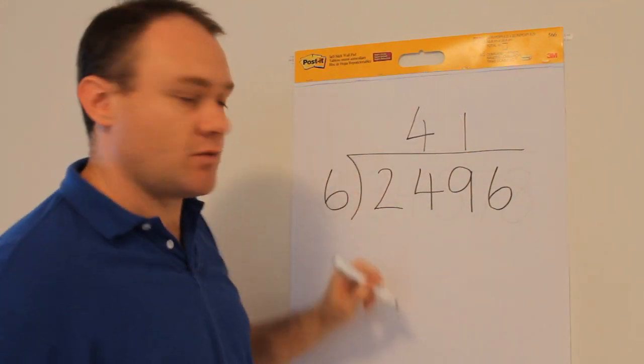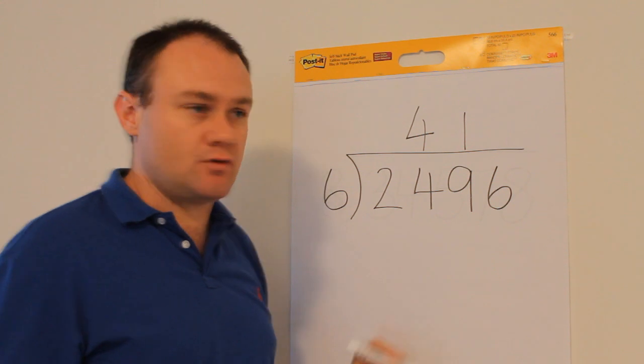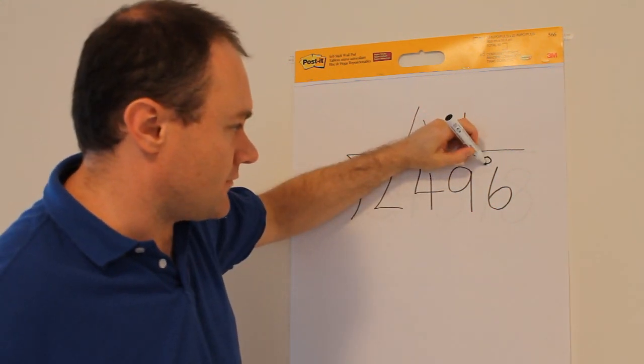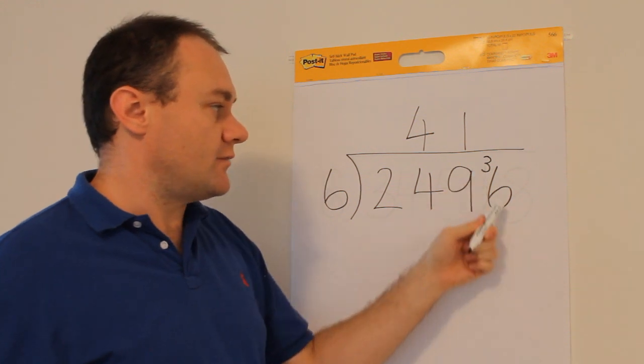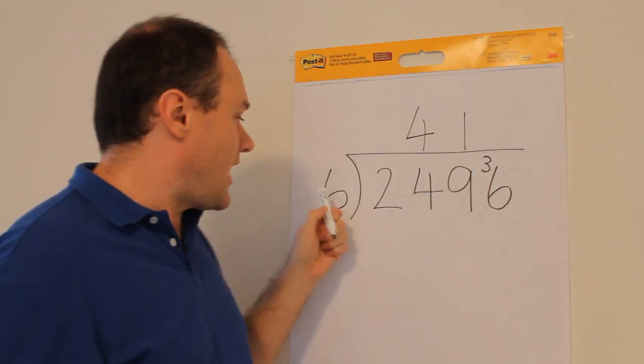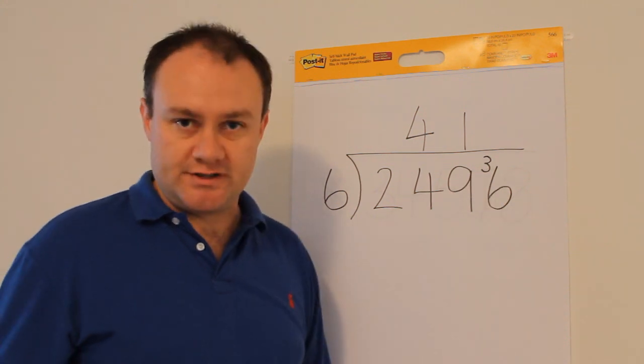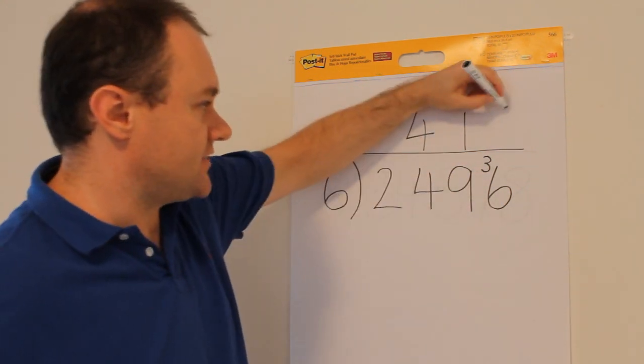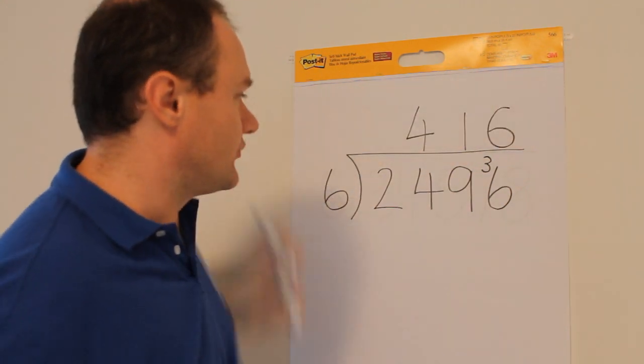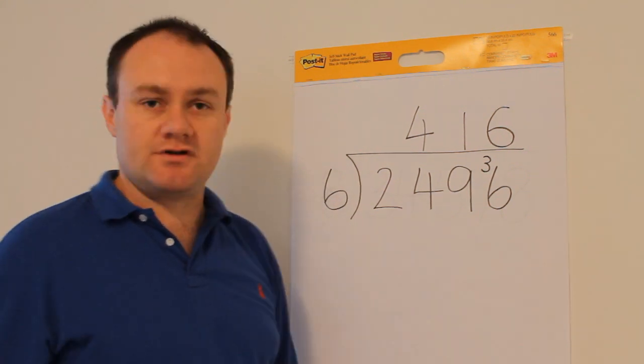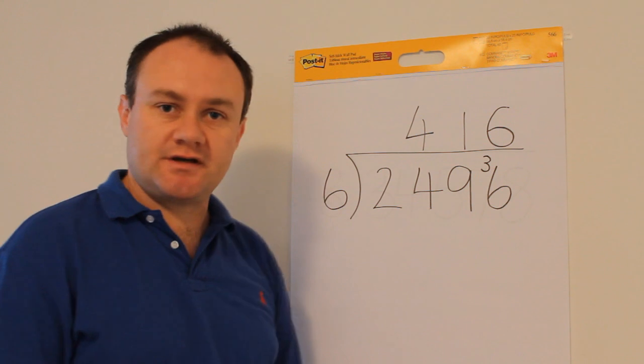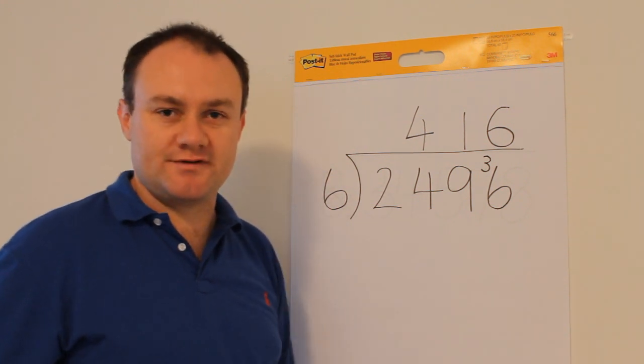So up goes the one and as with the previous example I write the leftover amount in a small font just there. This now means the last question is how many times does six go into 36? Well, six times six equals 36 and so there you have it: 2496 divided by six equals 416.